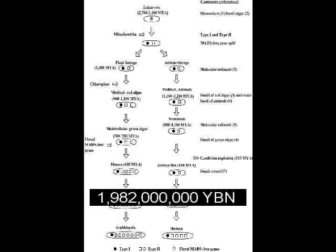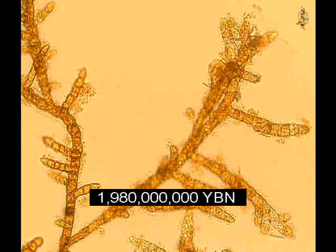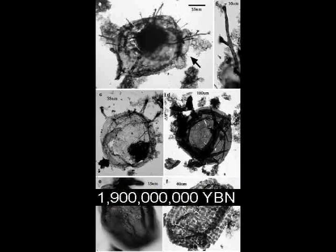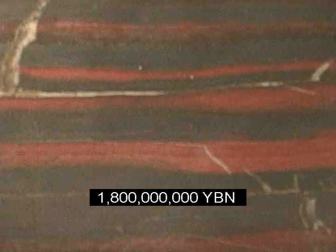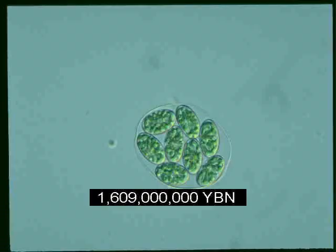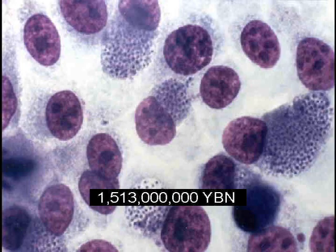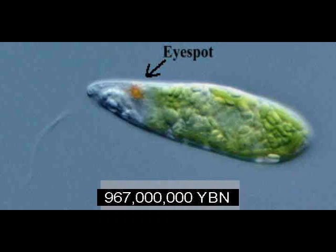Homeobox genes regulate the building of major body parts. Multicellular eukaryotes. Differentiation in multicellular eukaryotes — gamete-producing and somatic cells. Oldest eukaryote fossils: acritarchs. End of banded iron formation. First plant — cyanobacteria becomes plastids in a eukaryotic cell. First fungi.